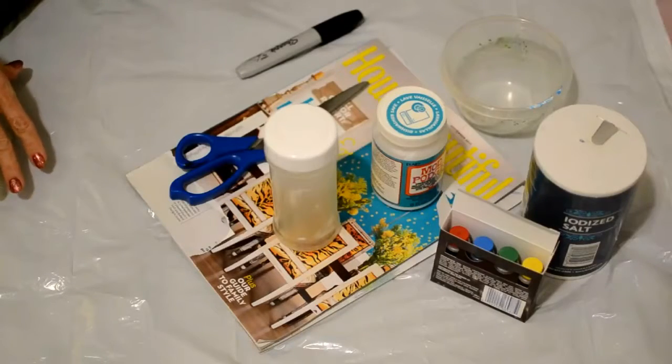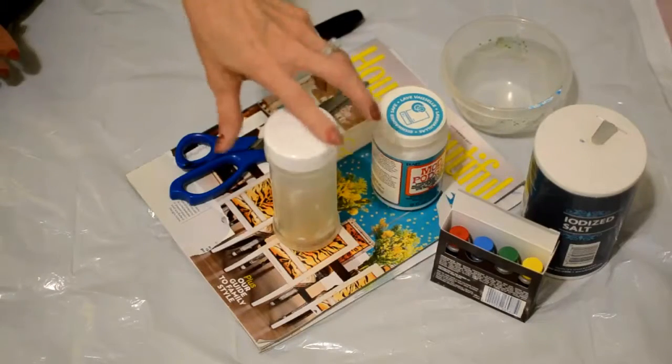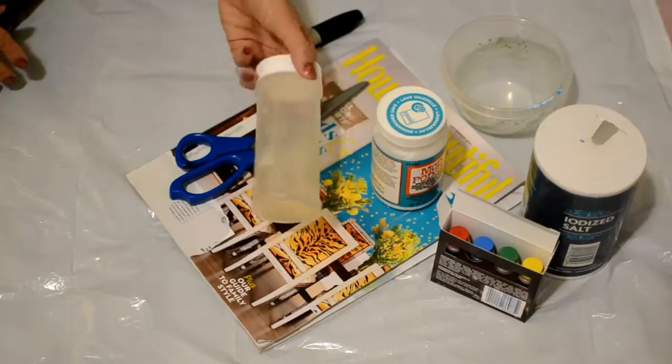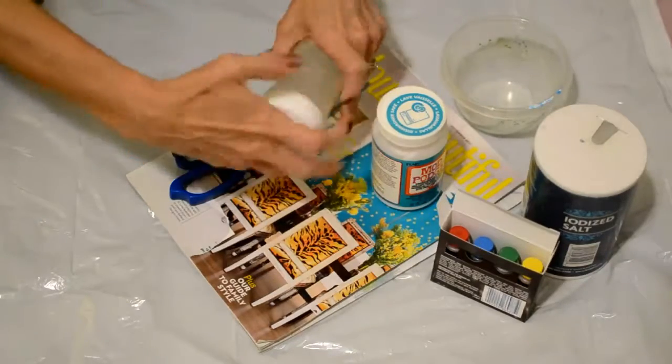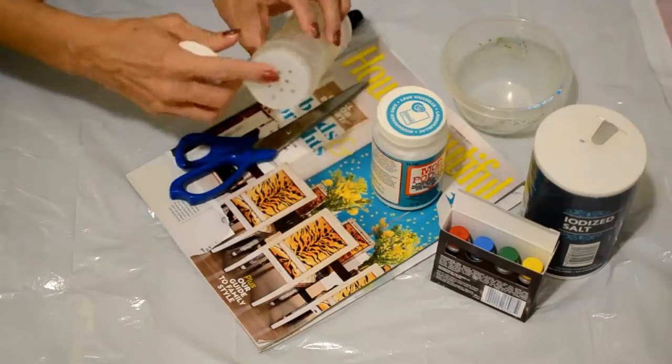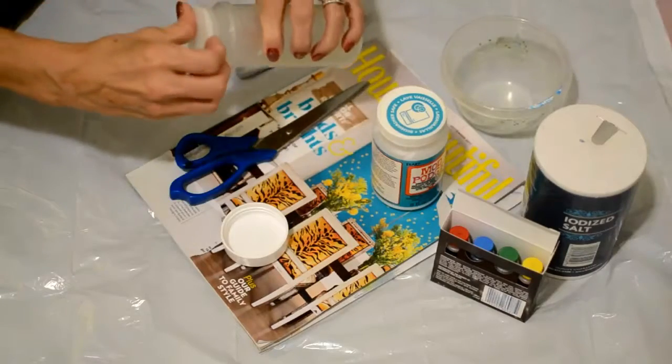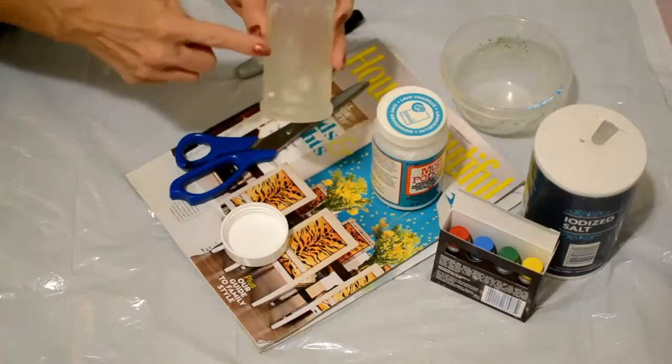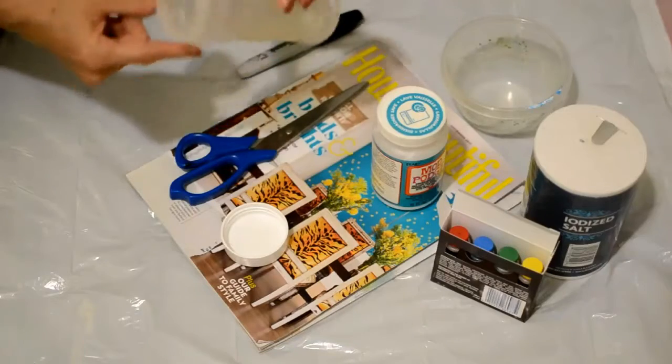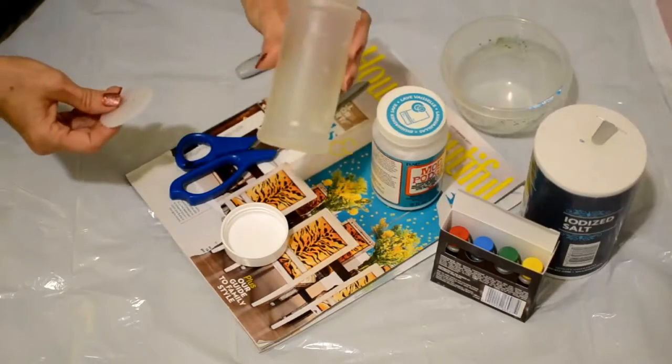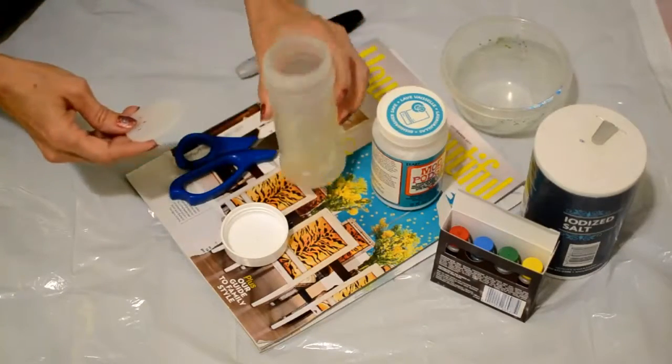I'm going to be making a DIY salt shaker and this is just a used spice jar. It has the holes in it already and that just pops off. I've already taken the label off which is still kind of sticky.